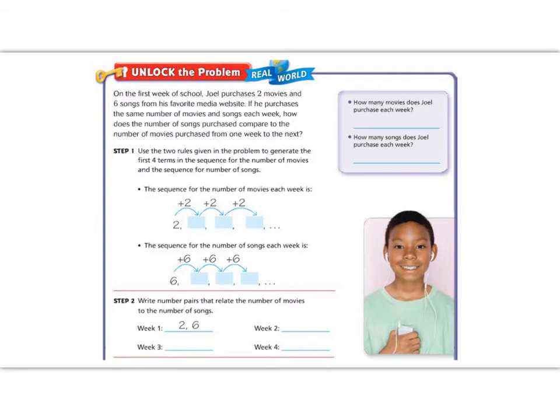So let's begin by reading the unlock the problem. On the first week of school, Joe purchases two movies and six songs from his favorite media website. If he purchases the same number of movies and the same number of songs each week, how does the number of songs purchased compare to the number of movies purchased? Well, let's break this down.